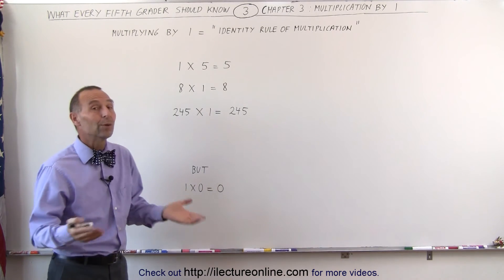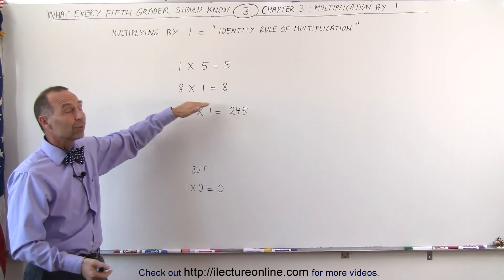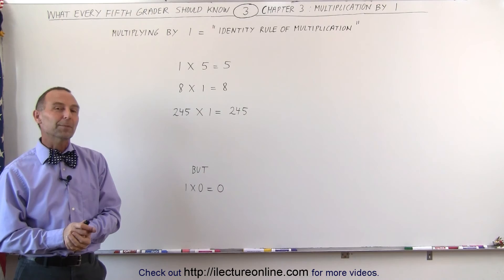So, multiply times 1, it's really easy. Just repeat the number. 1 times 5 is 5, 8 times 1 is 8. And that's the rule of multiplying by 1.